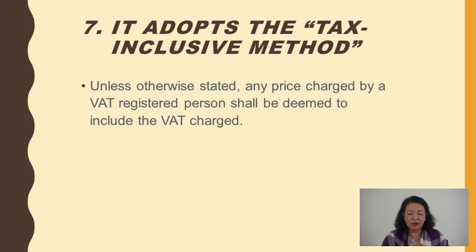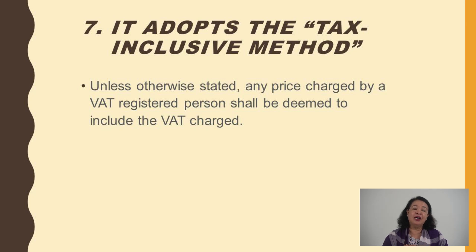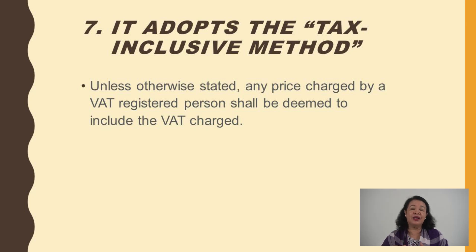Number seven: VAT adapts the tax inclusive method. The price charged by a VAT-registered person is deemed to include the VAT charge. Although now, for clarity, VAT is billed separately, if you look at the total amount, it already includes both the net amount and the VAT. Net of VAT plus the amount for VAT equals total sales.